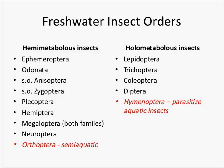Hemimetabolous insects do not have a pupal stage in their life cycle. Holometabolous insects do possess a pupal stage. Among the hemimetabolous insects are the Ephemeroptera, the order Odonata — covering both Anisoptera and Zygoptera — the Plecoptera or stoneflies, the Hemiptera, and the Megaloptera. There are also Neuroptera and Orthoptera, though we will not cover Orthoptera since all orthopterans here are only semi-aquatic.